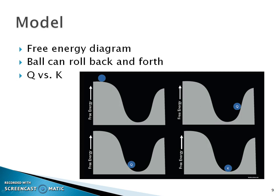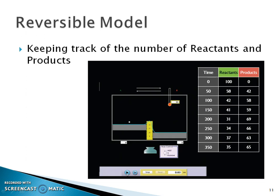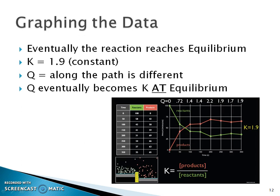He talked about this model and this free energy diagram. We're going to come back to this free energy diagram in Chapter 19 and discuss how reactants, products, free energy, and equilibrium are related to each other. We talked about that reversible model and how he kept track of reactants and products. Graphing that data, the K value — the equilibrium constant — stayed at 1.9.